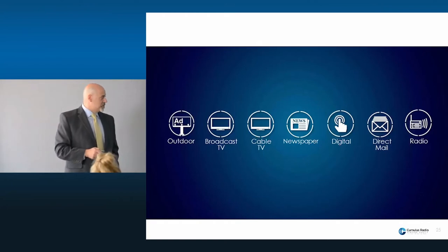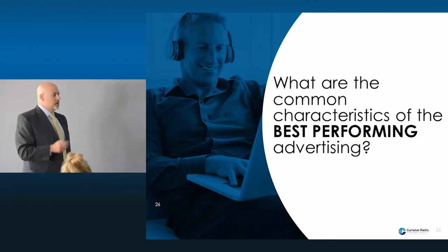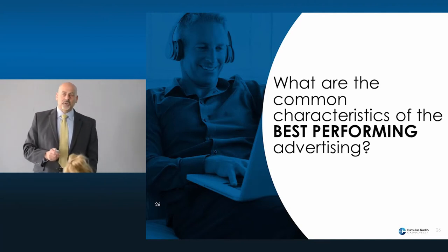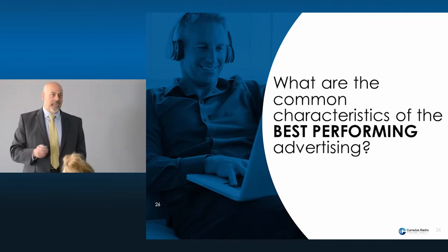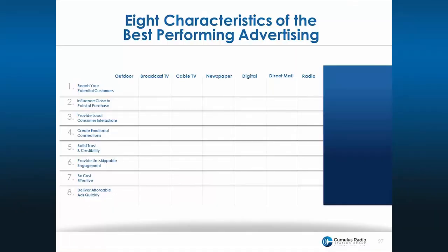As business leaders, you have a lot of advertising options available — outdoor, television, newspaper, digital, direct mail, and of course radio. The other thing we'd like to share is a study that looks at the eight characteristics of the best-performing advertising campaigns. Sometimes it's best to emulate what works. This study was based upon 3,200 different successful advertising campaigns, and they identified eight characteristics listed along the left-hand side. Across the top are those different forms of advertising. We want to review the eight characteristics and see how each measures up.